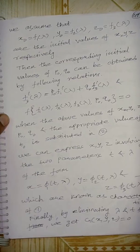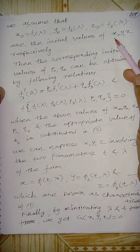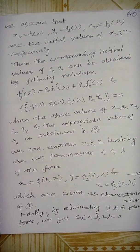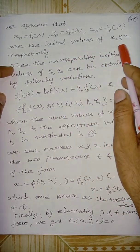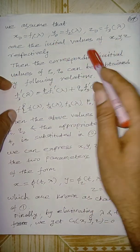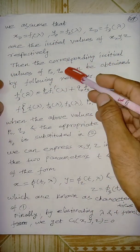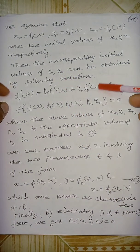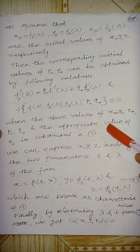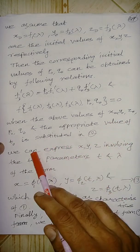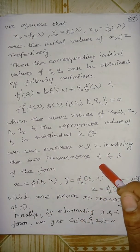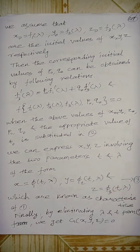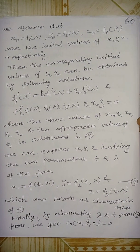We assume initial values and find p0 and q0 first. From the relation, find x0, y0, z0, and the appropriate value of t0. You can express x, y, z involving parameters t and lambda, then eliminate to find the final answer. The working rule is easier to understand with practice.